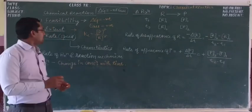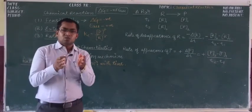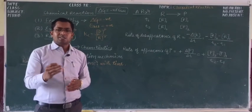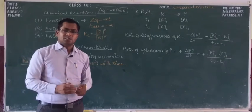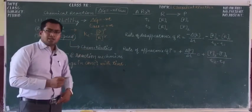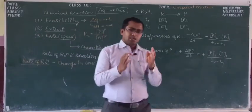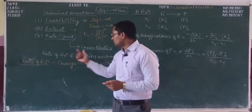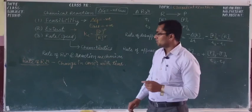Now we come to rate of reaction or speed of reaction — at what speed, at what rate the reaction will proceed. The answer to that we get from chemical kinetics. Chemical kinetics is a branch of chemistry which deals with the rate of reaction and reaction mechanisms. So this is the definition of chemical kinetics.